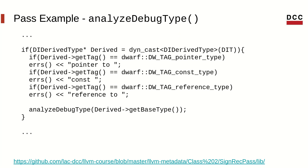Back in our previous function, we also need to handle debug derived types. Derived types represent qualified types such as pointers or references. In that case, we handle three of the most common derived types: pointers, const modifiers, and references. Then we call the same analyzeDebugType function recursively, passing the type which is base to the derived type as an argument.